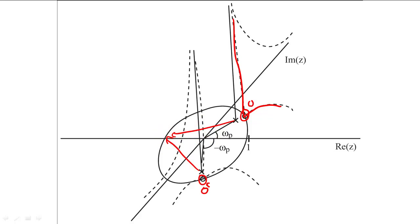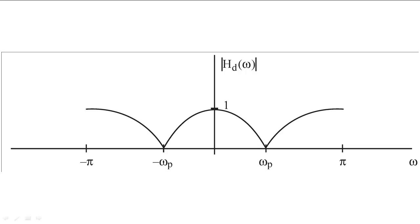Therefore, we might guess that the magnitude of the filter might look something like this. The filter would be zero at negative omega p and omega p and would increase to a couple local maxima away from the location of the zeros.